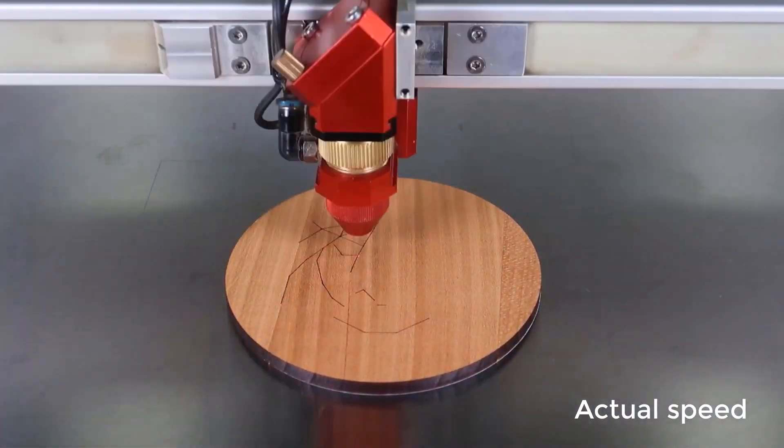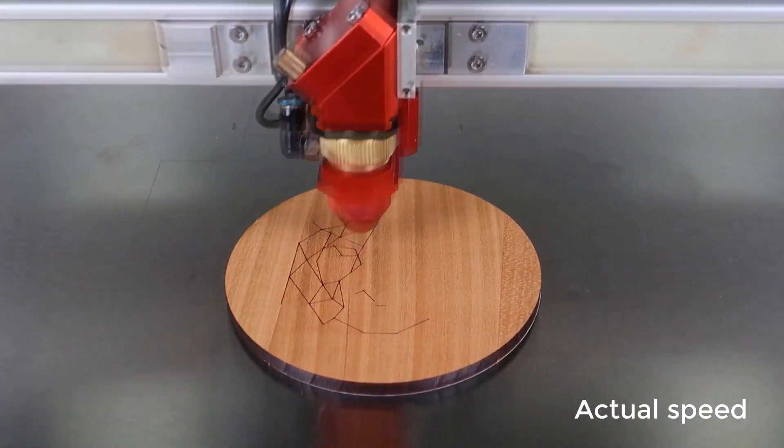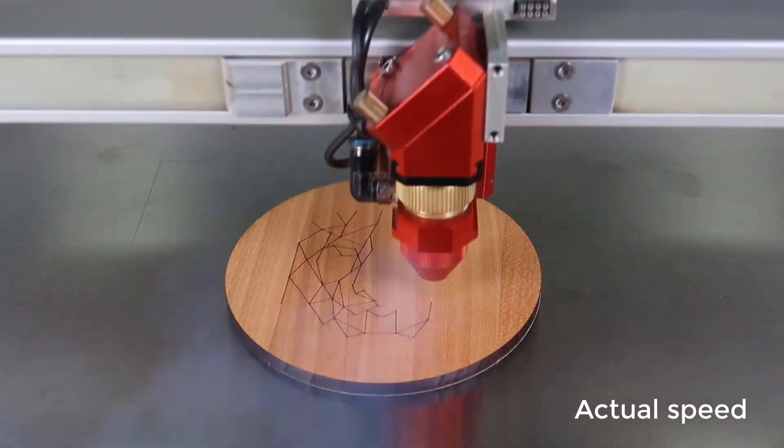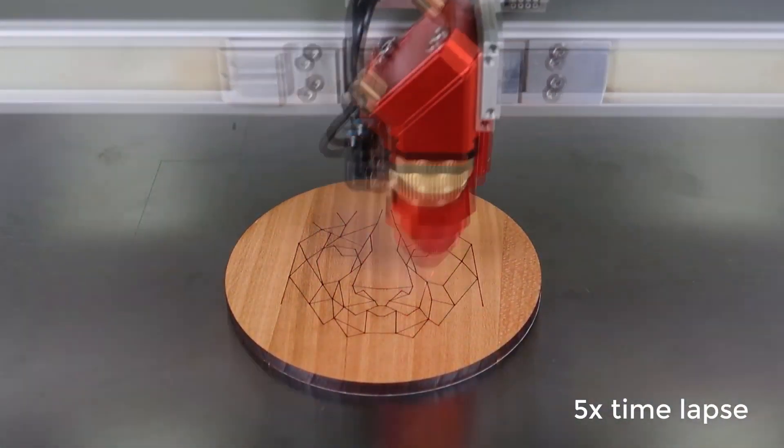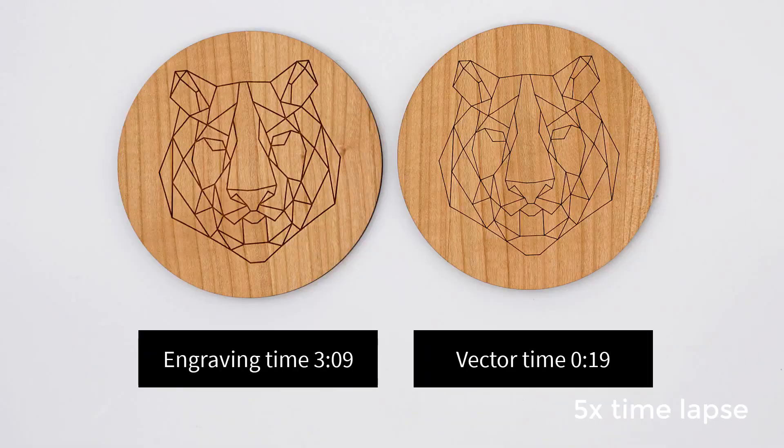In this case we're not doing a full cut but a kiss cut, meaning we're going to be using a lot less power on the cut line. For this example the total time was only 19 seconds, much faster than our 3 minutes and 9 seconds on the raster engraving.